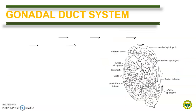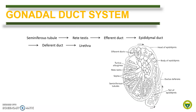Now let us review the basic gonadal duct system — the duct system where the formed spermatozoa pass through out of the body. The sperm is produced at the seminiferous tubules, in particular at the convoluted seminiferous tubule. It then passes through the rete testis to the efferent duct and exits as the epididymal duct. The epididymis is composed of the head, body, and tail. The epididymal duct then exits as the deferent duct and to the urethra, where it moves out from the body during ejaculation.